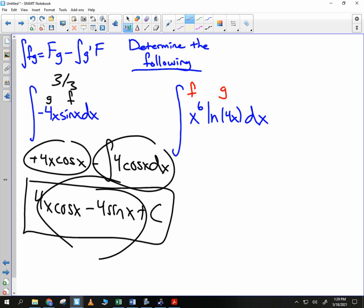So you have big F, which is x to the 7th over 7, times the natural log of 4x. Minus the integral of x to the 7th over 7 times. Does anybody know what the derivative of natural log of 4x is? 1 over x. How did you come up with that?